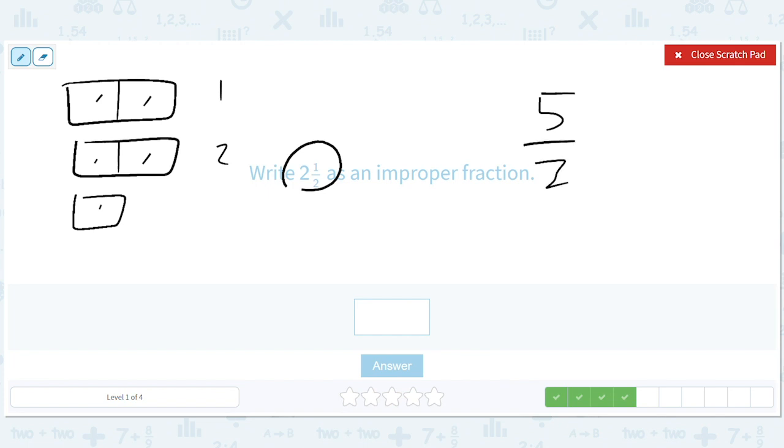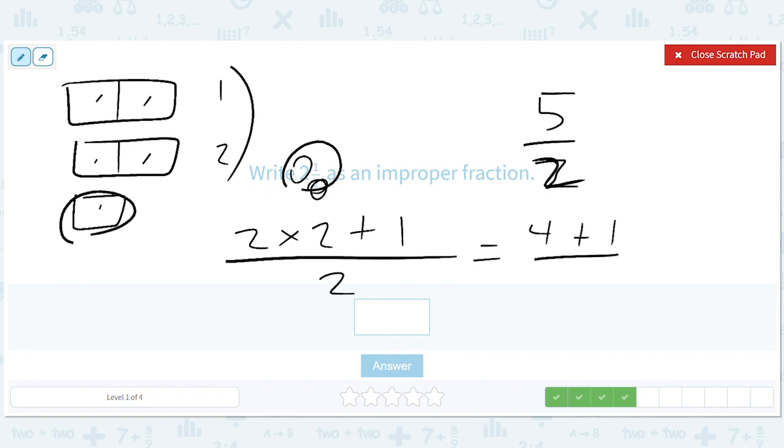So, how can we come up with a formula for that? Well, we take our 2 and we multiply it by the number of pieces in each. So, we do 2 times 2 plus this 1 all over 2. So, that's 4 plus 1 all over 2 or 5 halves.